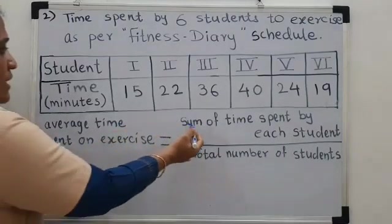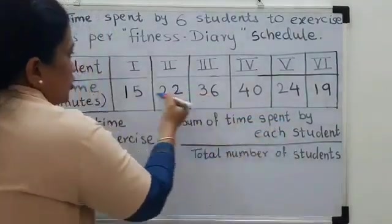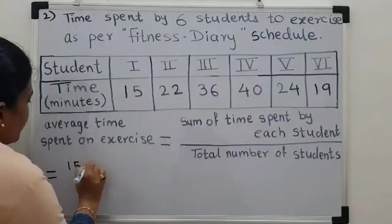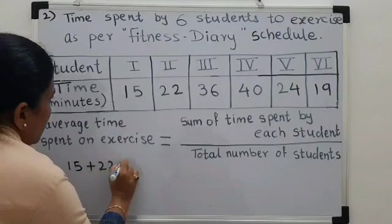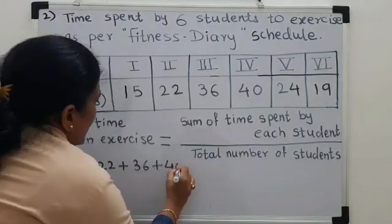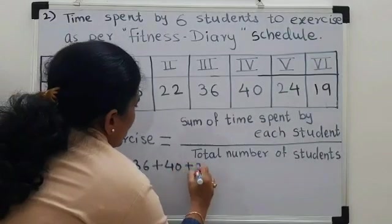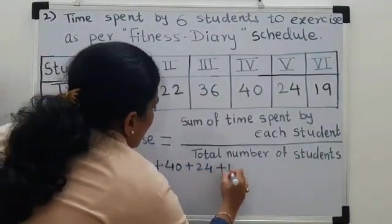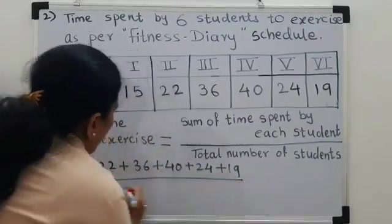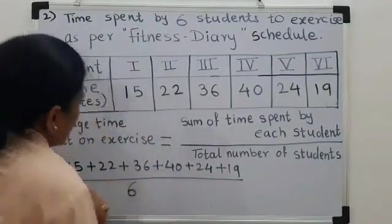Now, I will take sum of time spent by each student. So, I will add 15, then 22, 36, plus 40, plus 24, plus 19, upon total number of students in this case is 6.